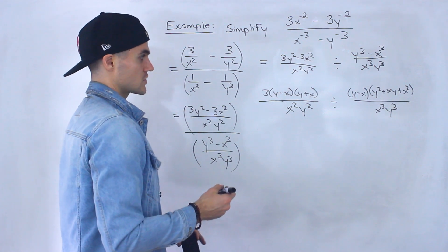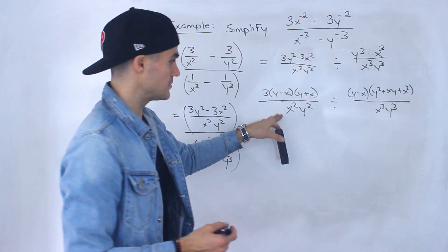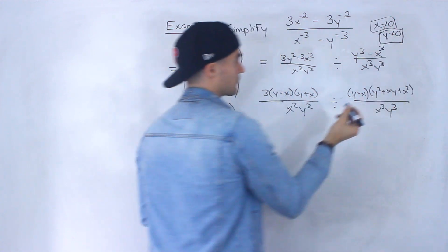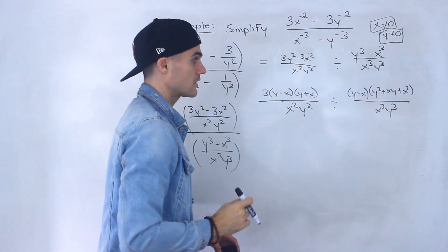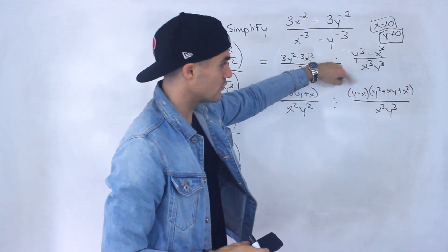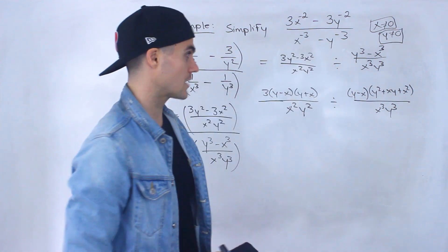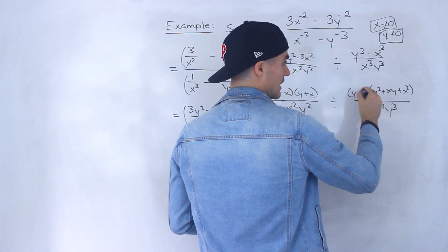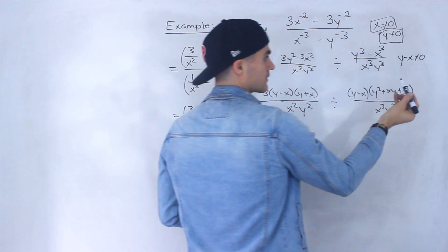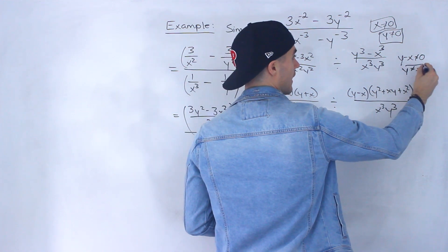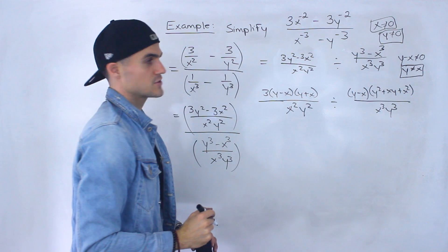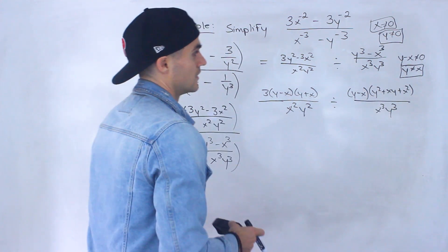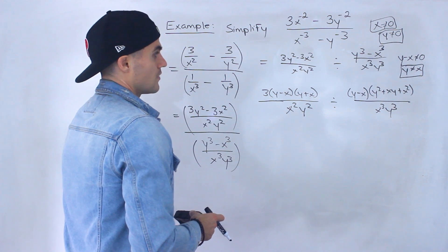Now everything is factored, so it's best to get the restrictions. In the first fraction, the denominator can't be zero, so x cannot equal zero and y cannot equal zero. Those are two restrictions from that denominator. Since we're dividing by a fraction, the numerator of the fraction we're dividing by can't be zero either, because that would make the whole thing zero and you can't divide by zero. So y minus x cannot equal zero, which means y cannot equal x. That's another restriction.